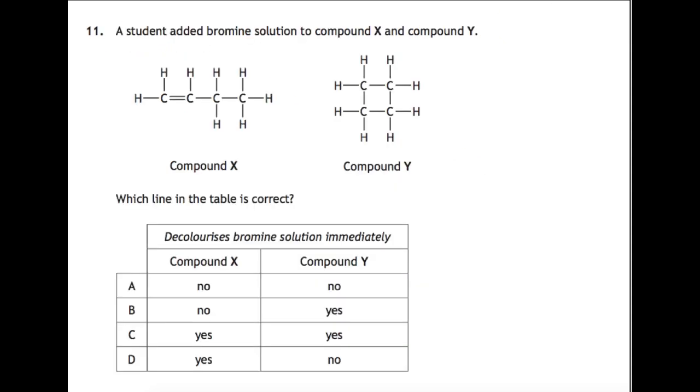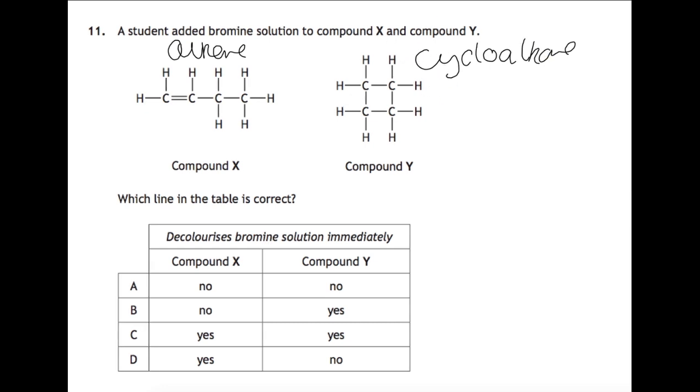Question 11, again looking at organic chemistry. We've got two compounds here. One with a double bond and one without. The compound on the left is an alkene and the compound on the right is a cycloalkane. You need to know how they both react with bromine water. Alkenes rapidly decolorize bromine water whereas cycloalkanes do not because they don't have a double bond. That means our answer for this question is D where compound X will rapidly decolorize bromine water whereas compound Y will not.